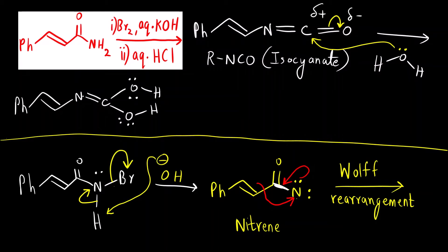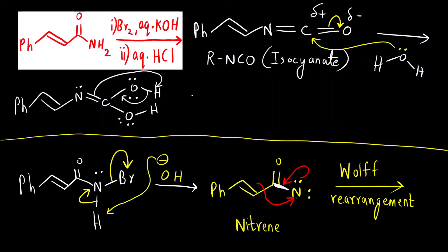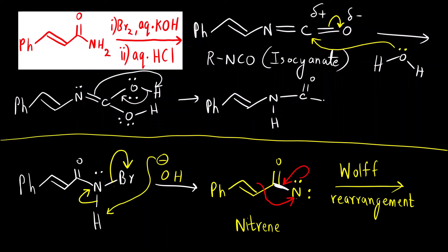What we have is an enol (or aminol — enaminol). This undergoes tautomerism to form a carbamic acid type intermediate. The H shifts and oxygen gets its lone pair back. What we get is Ph-NH-C(=O)-OH. Since the base is still present, it takes the H⁺ ion, forming a carbamate salt (O⁻K⁺).